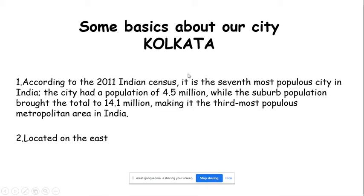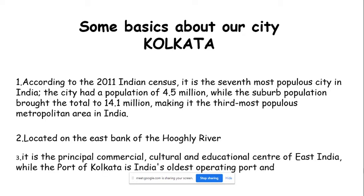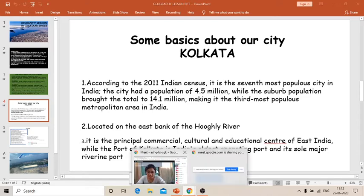Kolkata is located on the east bank of the Hooghly River. It is the principal commercial, cultural, and educational center of East India, while the Port of Kolkata is India's oldest operating port and its sole major riverine port — the Khidirpur dock near Khidirpur. It was the cultural and educational center of the East India Company. It is a very old city, and as the population grows, the city has extended more and more.